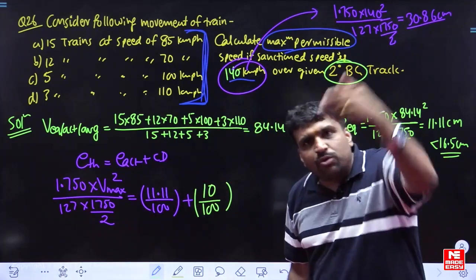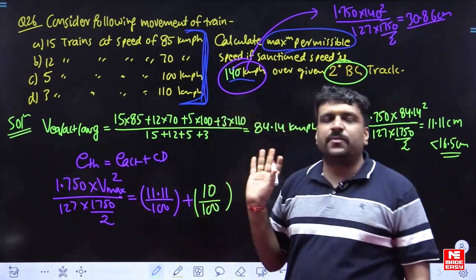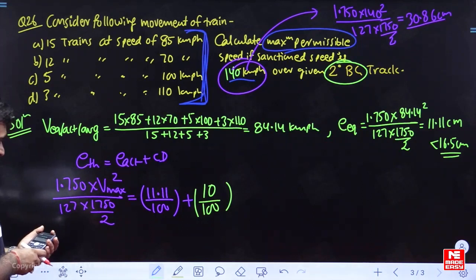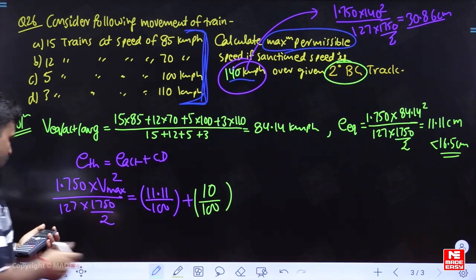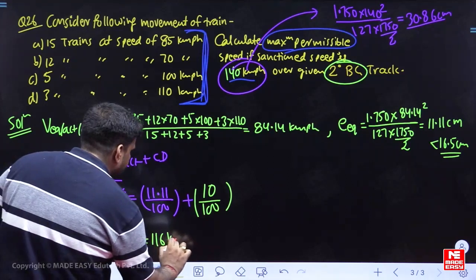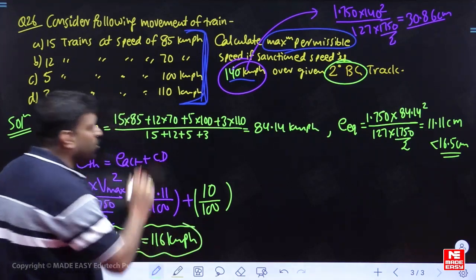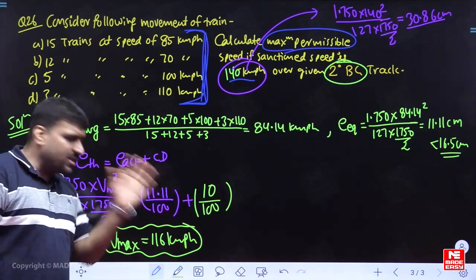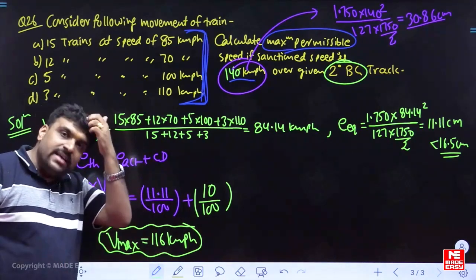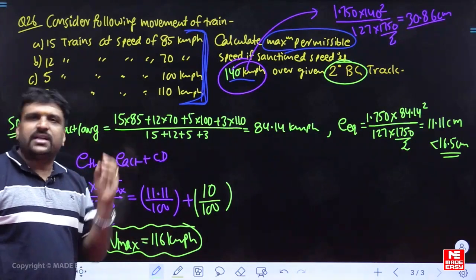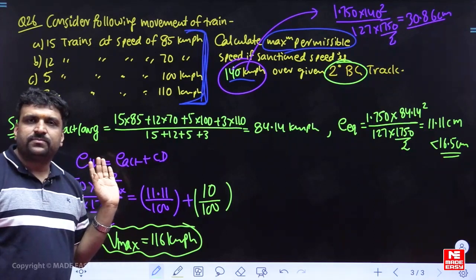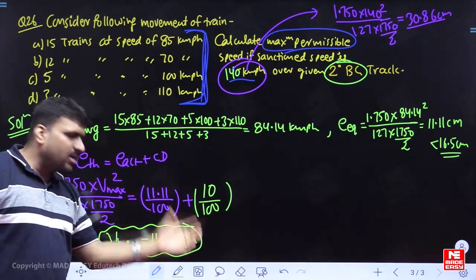You have to reduce the speed such that the demand becomes 21 centimeters. So V-max = √[(11.11/100 + 10/100) × 127 × 875 / 1.750]. V-max comes out to be 116 kmph. The train expected to come at 140 kmph has to reduce its speed to 116 kmph. It still has a 10 cm deficiency in super elevation, but that is completely fine. Practically, the train will run only up to 110 kmph instead of 140.